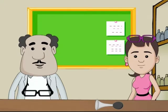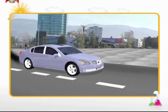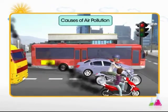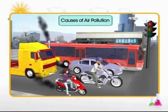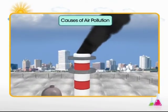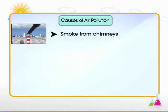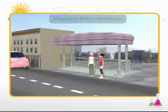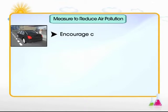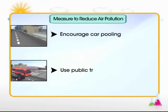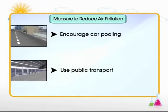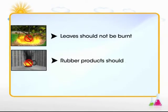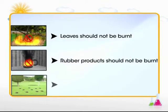Air pollution is chiefly caused by the exhaust gases from vehicles like cars, buses, scooters, bikes, and trucks. It is also caused by the smoke from the chimneys of factories and by burning leaves and rubber products. Air pollution can be minimized by encouraging carpooling and using public transport like buses and local trains. To keep the air clean, leaves and rubber products should not be burnt. Also, more plants should be grown.